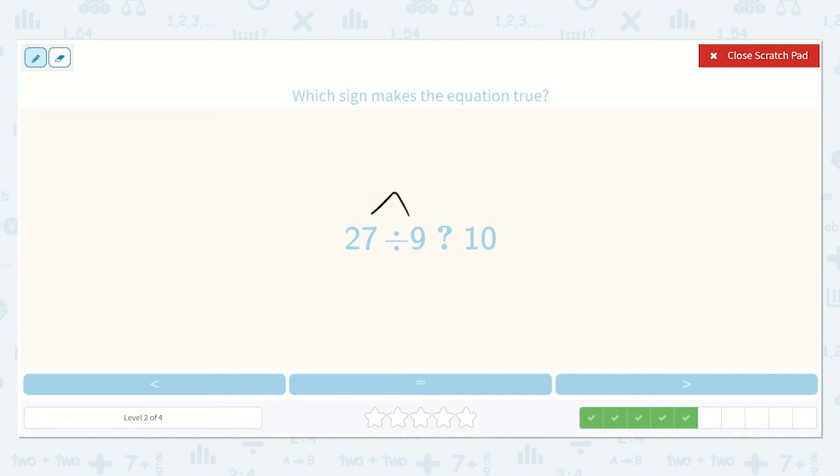27 divided by 9. And then we have 10. Well, let's see. Let's count by 9's. 9, 18, 27. Oh, that's 3. Oh, so 3 is less than 10. So it would be this symbol.